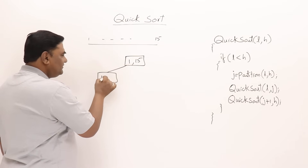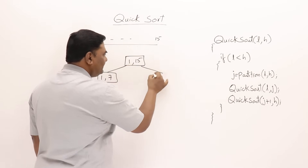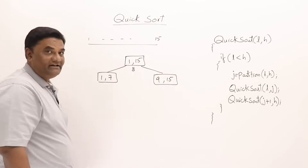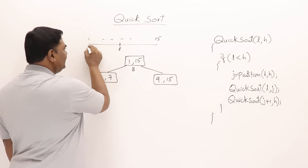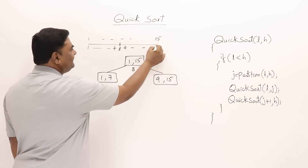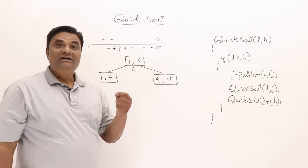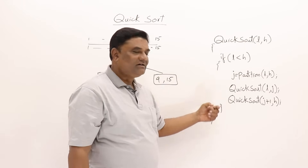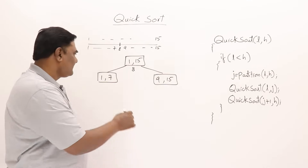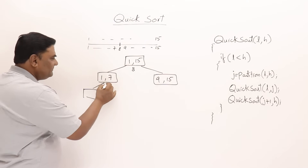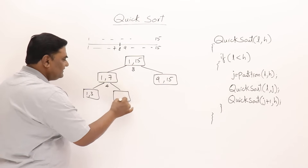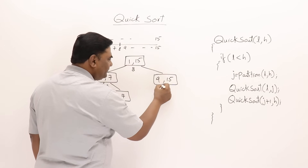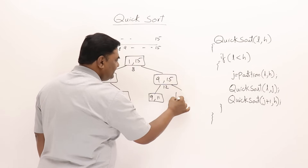Assuming partitioning is done at the middle, we get elements 1 to 7 on the left side and 9 to 15 on the right side — partitioning was done at index 8. For the left-hand side, if partitioning is again in the middle, the middle element will be 4, giving us 1 to 3 on this side and 5 to 7 on this side. Similarly on the right, partitioning at 12 gives us 9 to 11 here and 13 to 15.